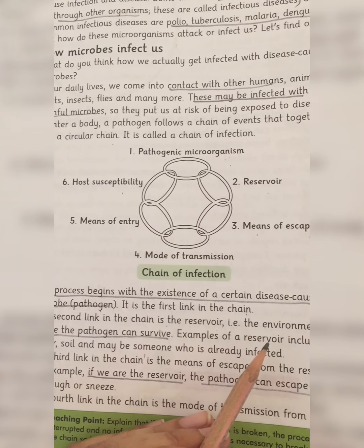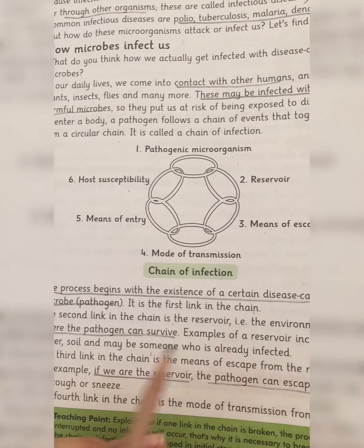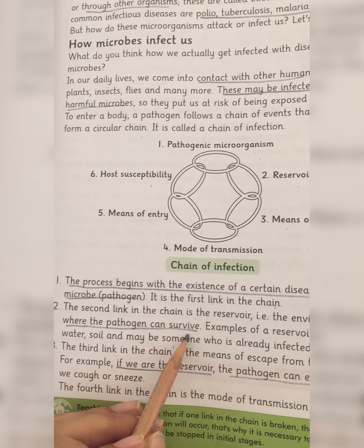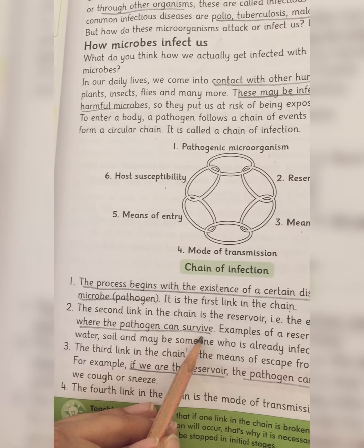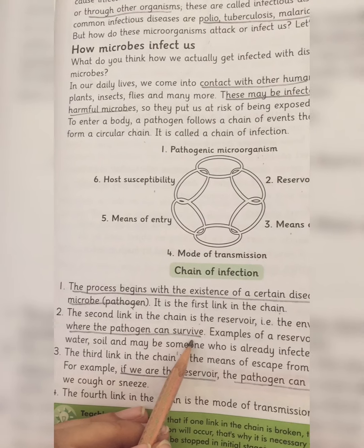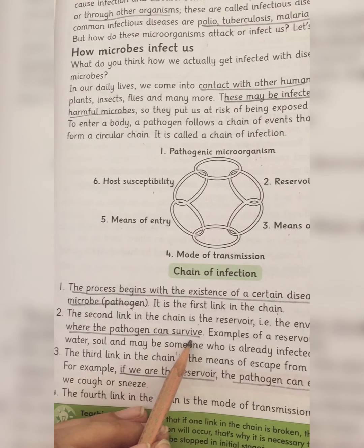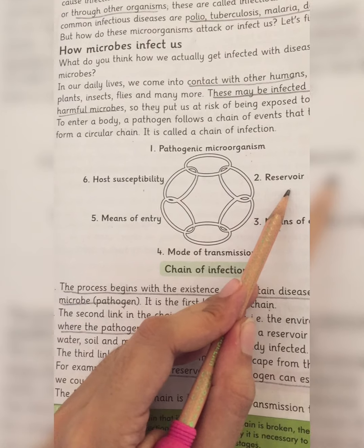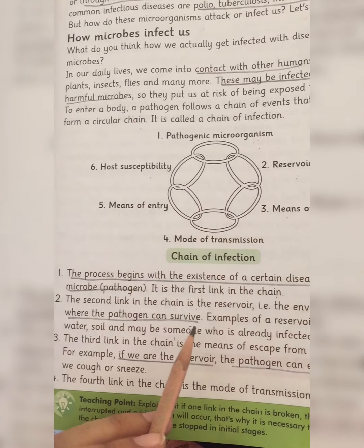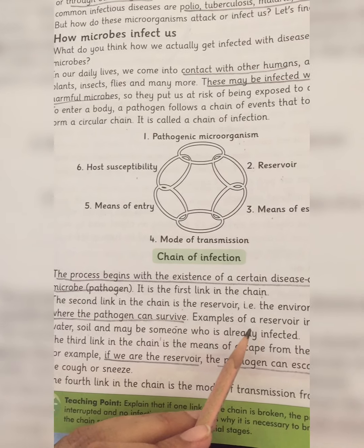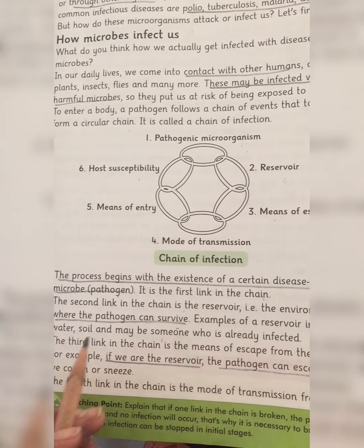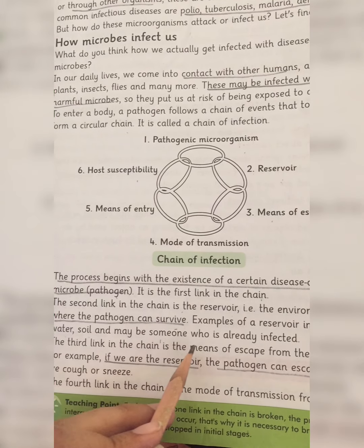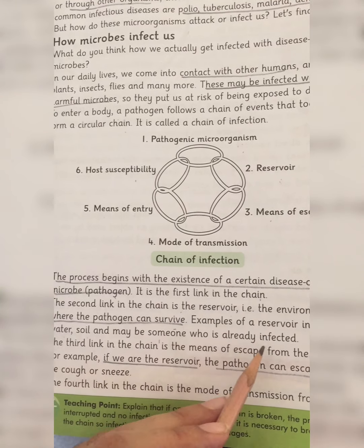The second link is the reservoir. Reservoir kya hai? The environment where the pathogen can survive — woh jagah ya woh khas organism jahaan pe woh harmful pathogens ya organisms mujud hain, use hum reservoir kehte hain. For example, our reservoir includes water, soil, and maybe someone who is already infected.